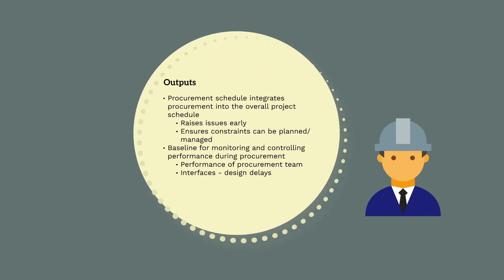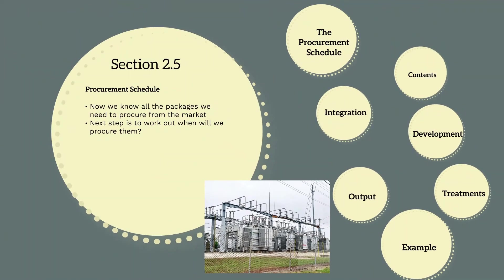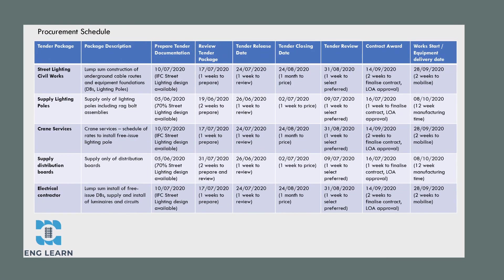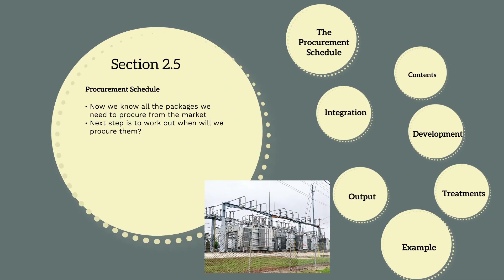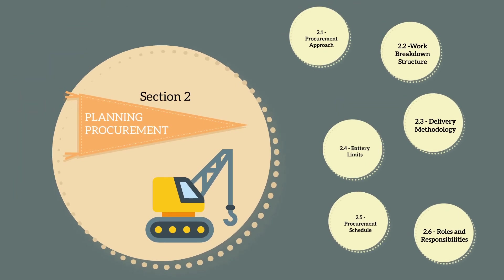As an output to this stage, we should have a fully integrated and populated procurement schedule that will be used as a basis for monitoring and controlling performance during procurement. It will help us to ensure procurement is properly planned, flag any potential procurement delays early, and ensure constraints can be planned and managed. To finish off this section, have a good look at the example procurement schedule attached to the course notes. For our street lighting example, it lists out the packages to be procured, the key procurement activities, and sets dates for all of these. Having covered the procurement schedule, we've gone through all the key tools used to plan procurement. We'll finish off section two by covering the roles and responsibilities of the project team during procurement.